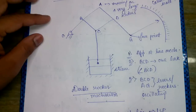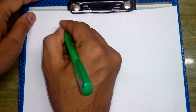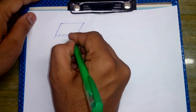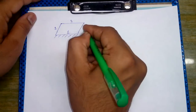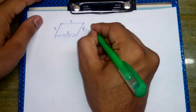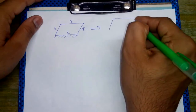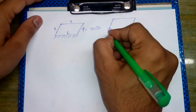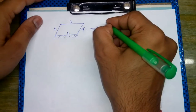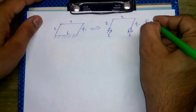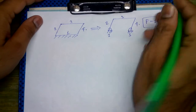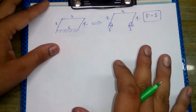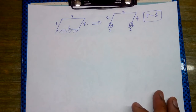One more numerical: if a diagram is given with link numbers 1, 2, 3, 4, this is also equivalent to another representation of the same diagram with links 1, 2, 3, and 4, such that the degree of freedom is still 1. These two representations are equivalent to each other. With this we come to the end of the first chapter.